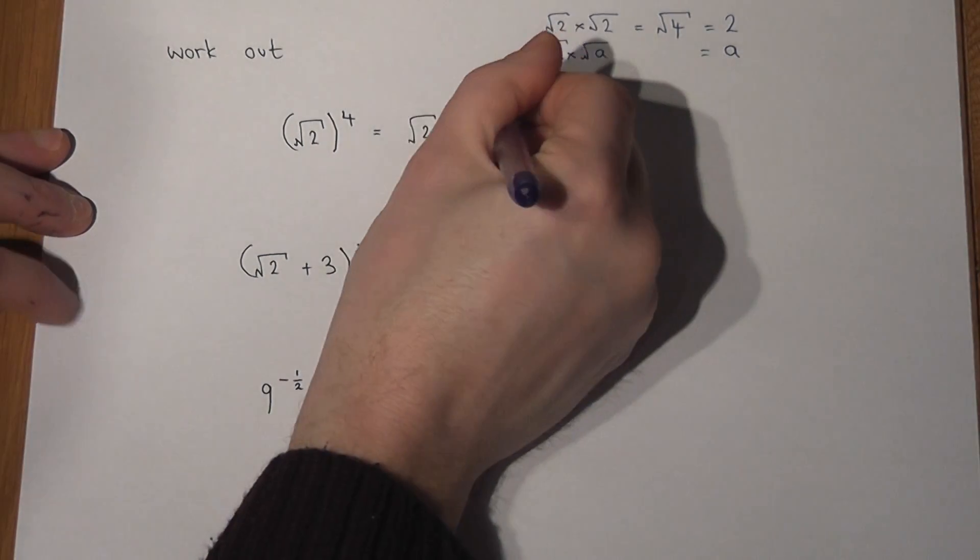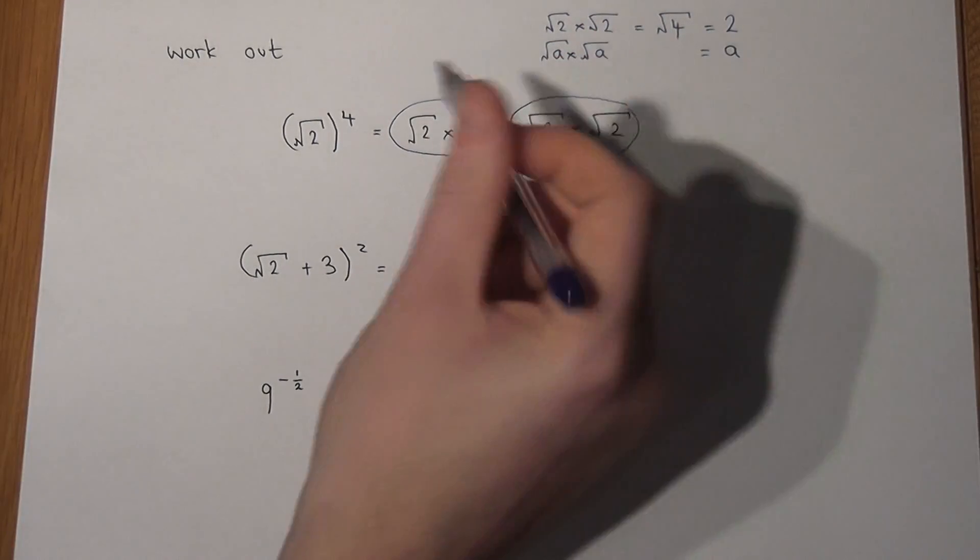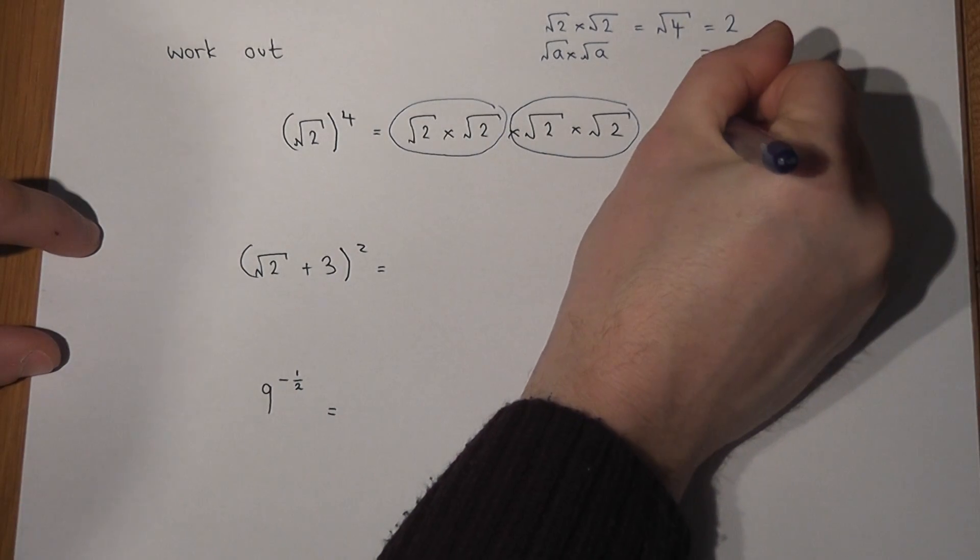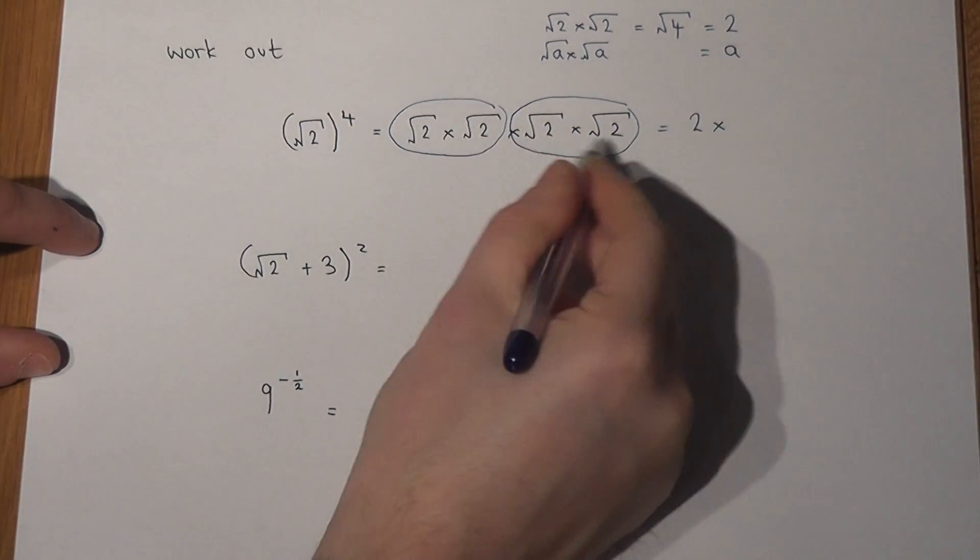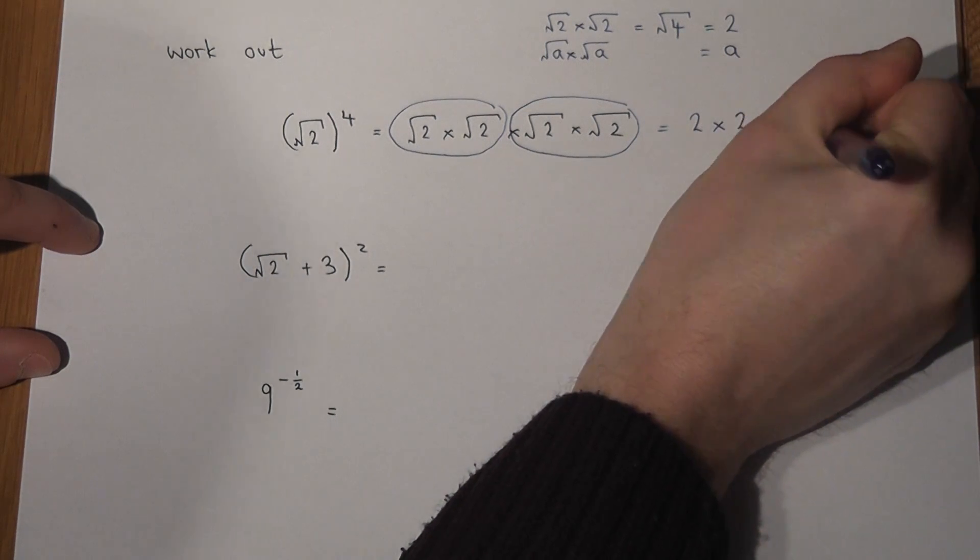So I can pair off those, and also pair off those. Root 2 times root 2 just equals 2. It happens again with this part, and that just equals 4.